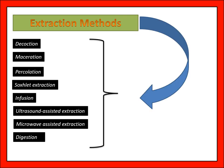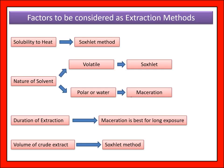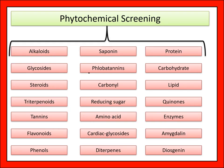Extraction methods include decoction, maceration, percolation, Soxhlet extraction, infusion, ultrasound-assisted extraction, microwave-assisted extraction, and digestion. Factors to consider in choosing an extraction method include: solubility to heat — best Soxhlet method; nature of solvent — volatile, Soxhlet, polar or water, maceration; duration of extraction — if long, maceration is best; volume of crude extract — for Soxhlet method, less volume is obtained.